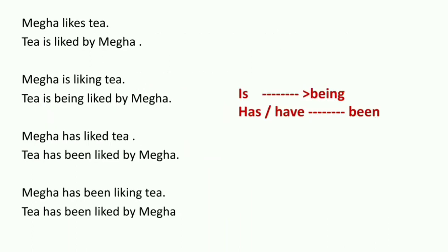Sorry for the background noise. Sentence number one: 'Mega likes tea.' Here, Mega is the subject, tea is the object, and 'likes' is the verb — the action. Now when you convert this to passive voice, bring the object first. Object 'tea' comes first, and 'by Mega' goes to the end.